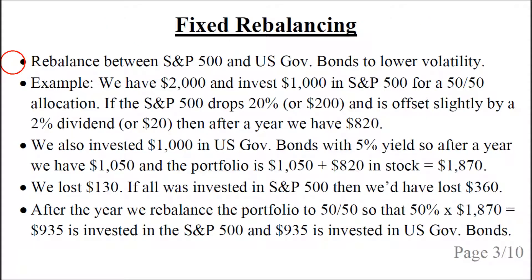We can rebalance our portfolio between the S&P 500 and US government bonds to lower the volatility. Let's consider an example. Let's say we have $2,000 and we invest $1,000 in the S&P 500, so we get a 50-50 allocation.